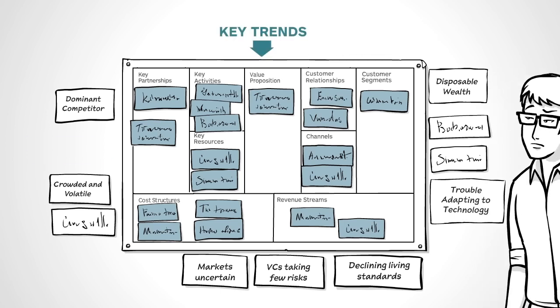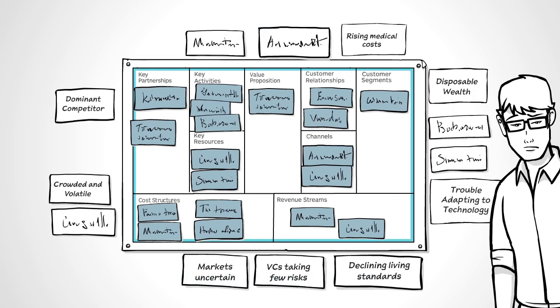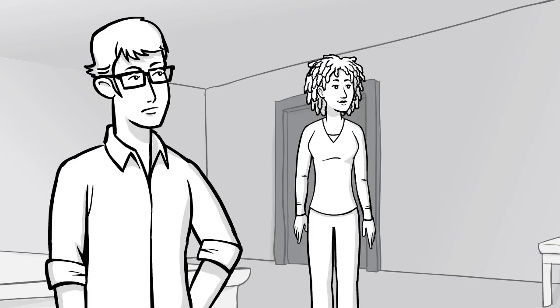Now you've mapped your environment, full of threats, opportunities and constraints. What do you do? Use the map, of course, to make your business model more responsive.